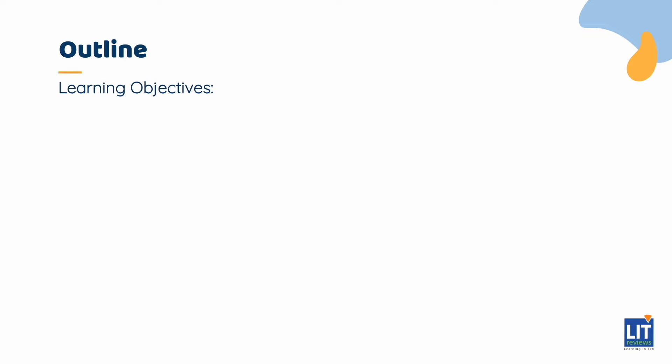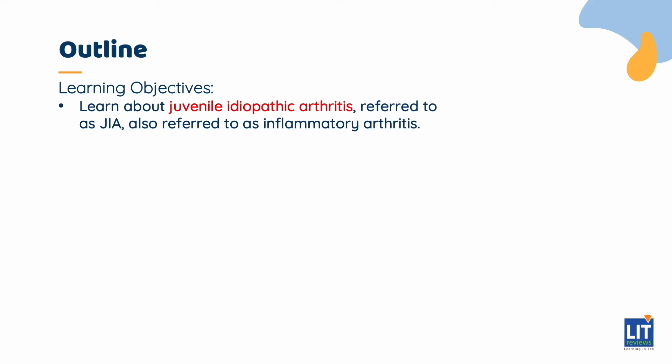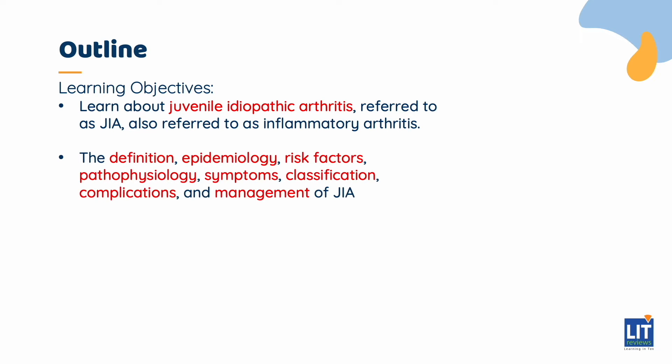The learning objectives and the purpose of this presentation is to learn about juvenile idiopathic arthritis, referred to as JIA, also referred to as inflammatory arthritis. We will talk about the definition, epidemiology, risk factors, pathophysiology, symptoms, classification, complications, and management of JIA.